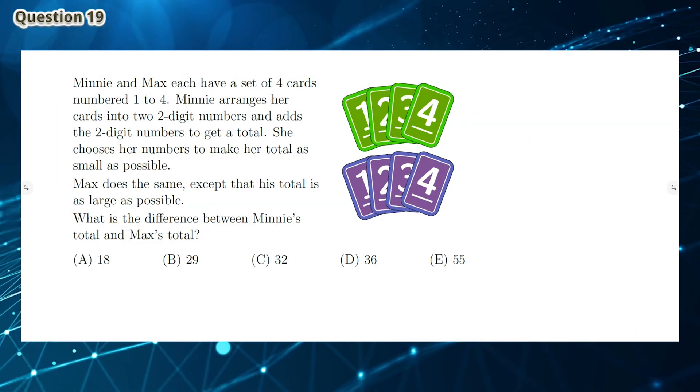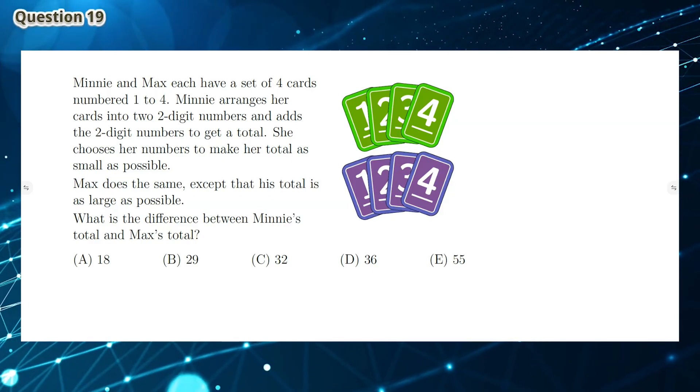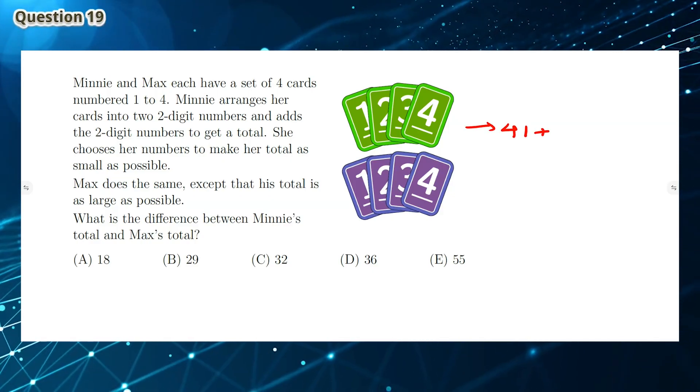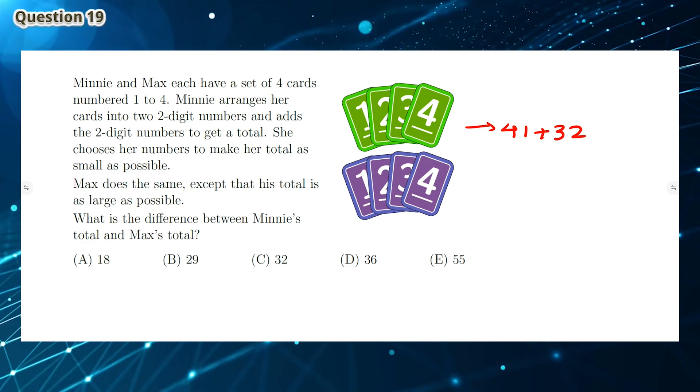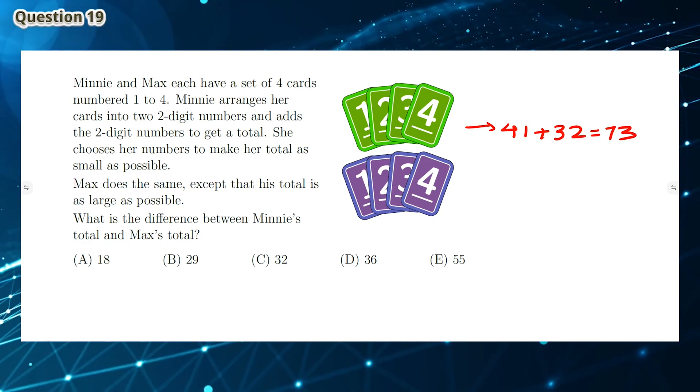Question 19: To make the largest number, you want the tens digits to be as large as possible. So we can add 41 and 32 where 4 and 3 are the largest numbers to get a sum of 73. In a similar way, to get the smallest possible sum, we want the tens digit to be as small as possible.